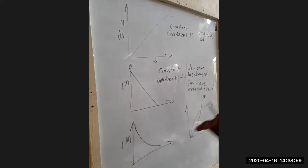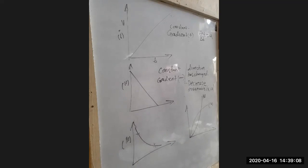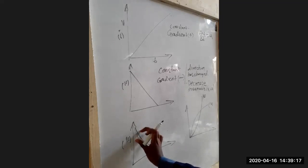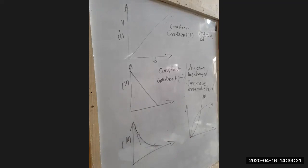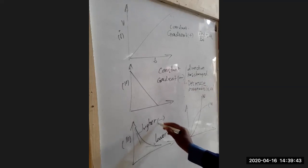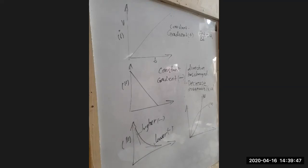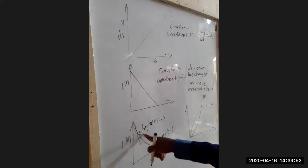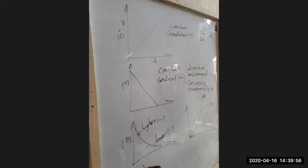Now let me get back to graph 3. This graph has a non-uniform gradient — the gradient is not the same at every given point. For such a graph we usually determine the gradient by taking two points, one toward the end and one at the beginning, and finding the gradient at each point. At this point the graph is steeper than at this other point, so the gradient is higher here than there. Because the graph is sloping toward the right, the gradients are both negative, and the gradient is decreasing.